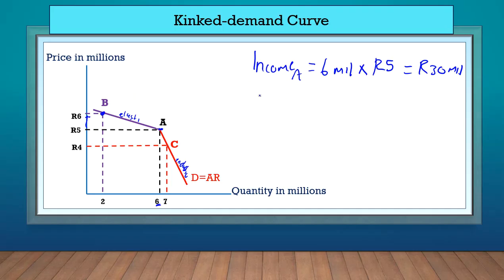Let's see how much income they will make at point B. At point B, the quantity is 2 million multiplied by the price of 6 rands. So they will make way less. 2 times 6 is 12 million, which is way less than the 30 million at equilibrium position.